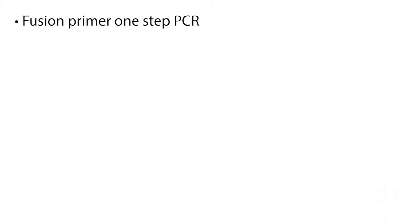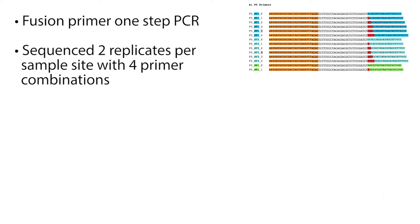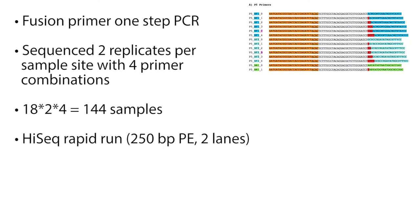For DNA metabarcoding, we used the fusion primer system, where the primer amplifies the target region while simultaneously including inline barcodes for sample tagging and pooling, as well as Illumina tails for sequencing. We amplified and sequenced two replicates per sample, each with four different primer combinations, giving us 144 samples in total. The ready-to-load amplicons were quantified and pooled to equal proportions onto an Illumina HiSeq system.